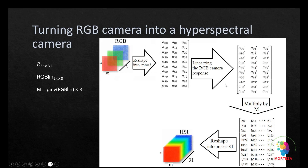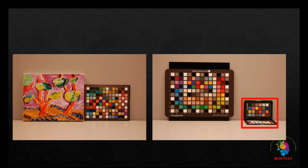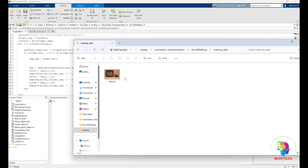Having matrix M, we can turn any digital camera into a hyperspectral camera by simply multiplying the RGB image by matrix M. The process involves reshaping the image, linearizing it, multiplying by matrix M, and then reshaping it into a hyperspectral image. The small Macbeth color checker will be used as training data and the rest will be used as testing. Now let's go to MATLAB and show you the procedure first-hand.